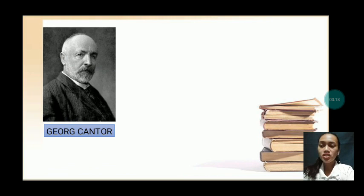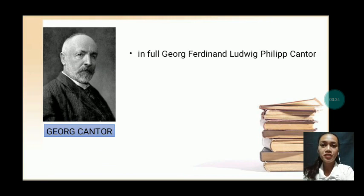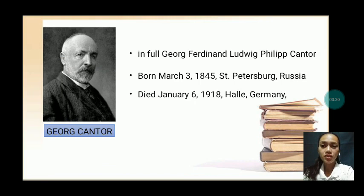Now I will be discussing the seventh and eighth mathematicians in the 19th century. The first mathematician, the seventh mathematician, is George Cantor. In full, he is George Ferdinand Ludwig Philip Cantor. He was born on